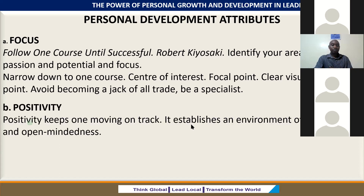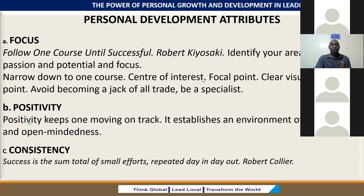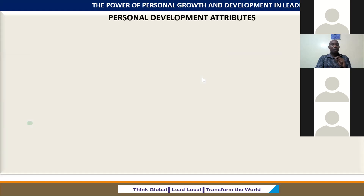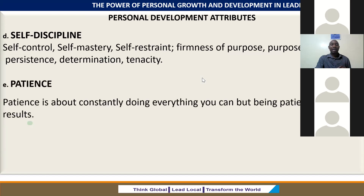Then positivity — this will keep us on track and establishes an environment of soberness and open-mindedness. The other attribute is consistency — accessing the sum total of small efforts that we repeat day in and day out. Consistency is the key success factor. It's not what we do once in a while that shapes our lives, but what we do consistently every day. For personal growth, consistency is the most important attribute when it comes to success. Then self-discipline — we need to be very purposeful, persistent, determined, and maintain tenacity.